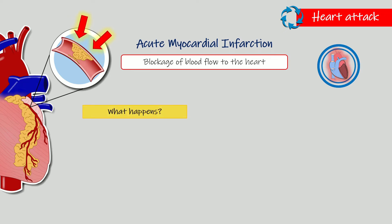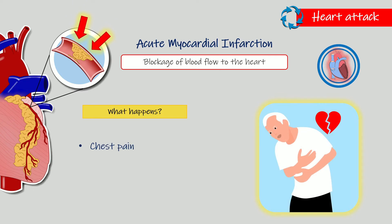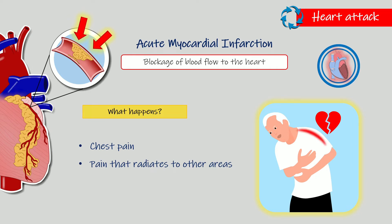How can you identify a heart attack? The most common symptom is chest pain, which some patients describe as if someone is making pressure or squeezing their heart. Sometimes this pain spreads to the shoulders, left arm, neck, jaw, and back. Patients can also present sweating, fatigue, and stomachache when the infarction is in the inferior wall of the heart, which can be confused with indigestion and delay treatment.